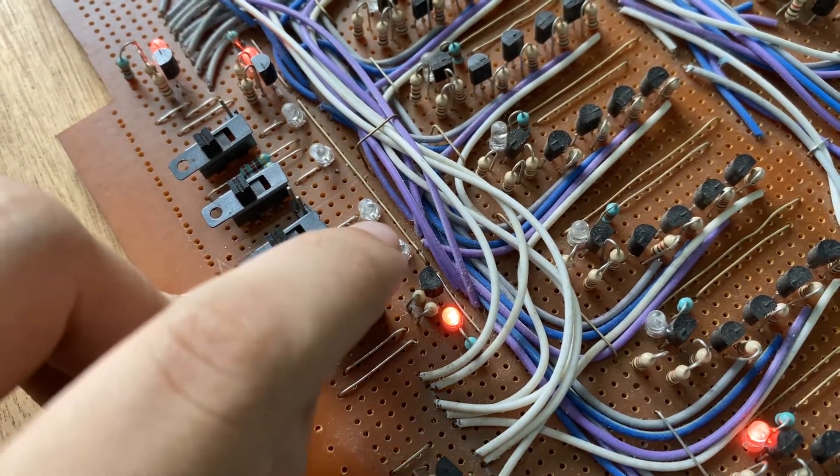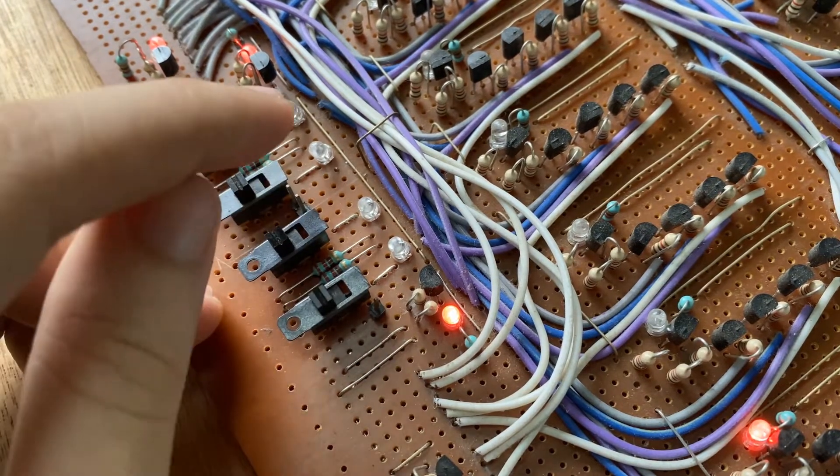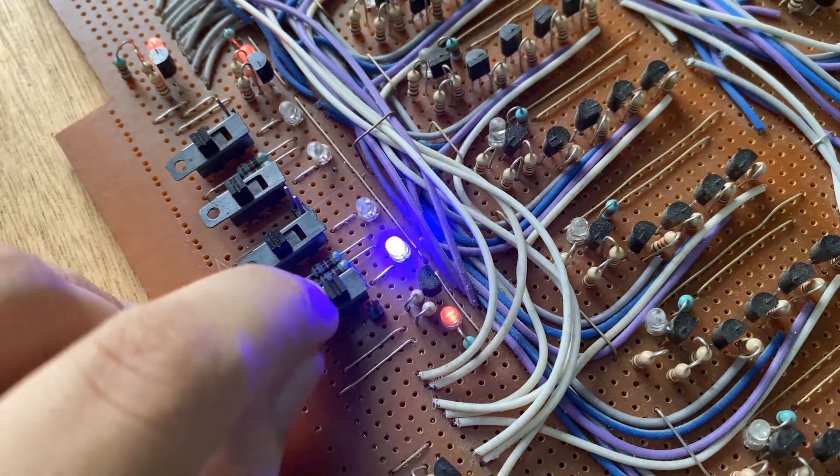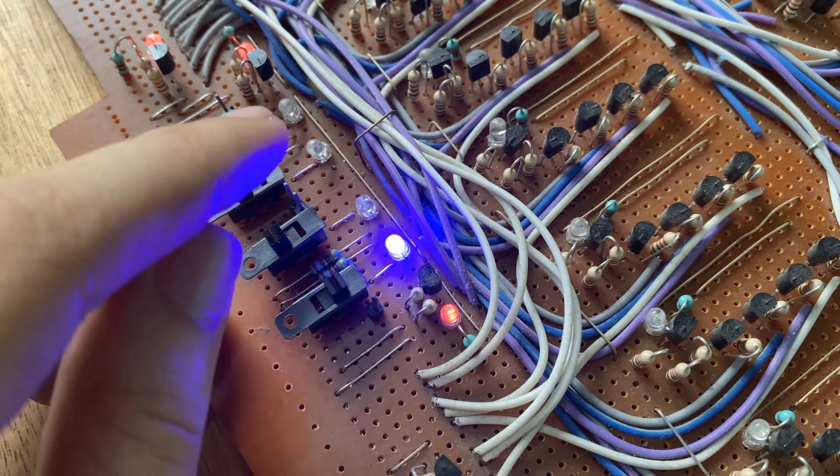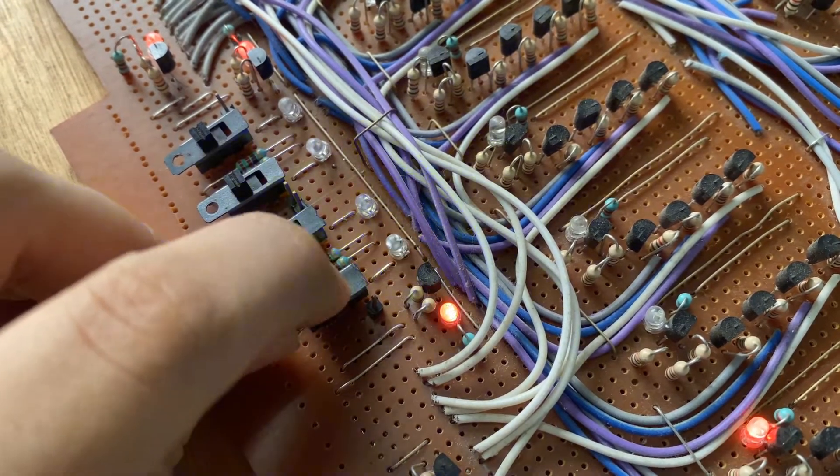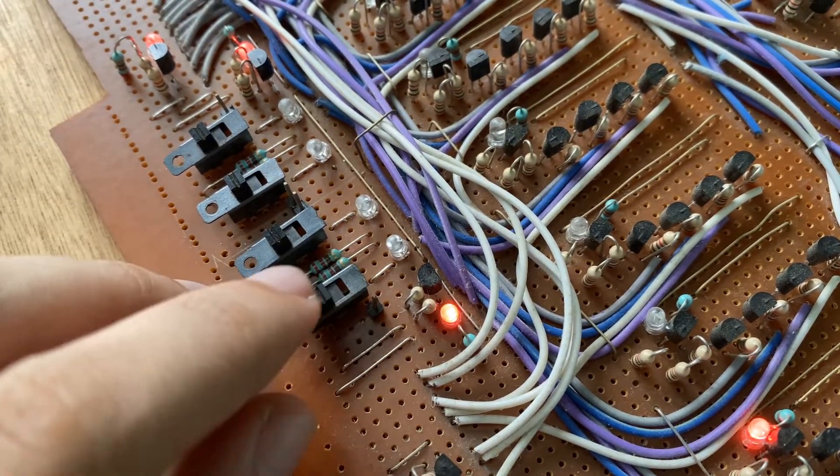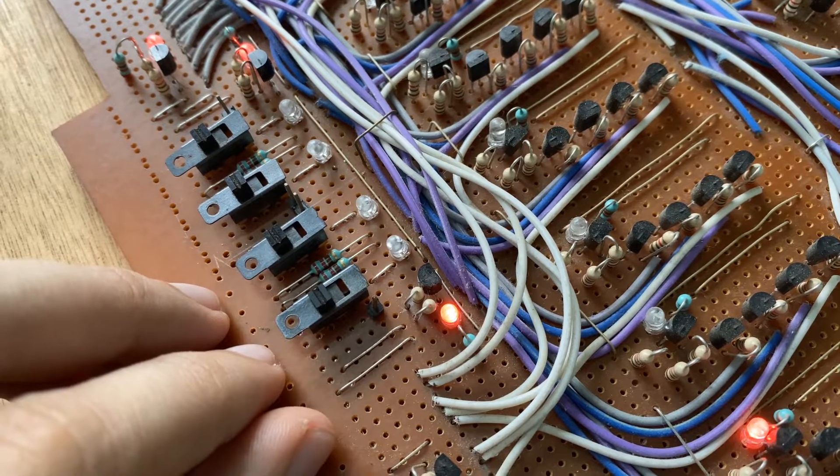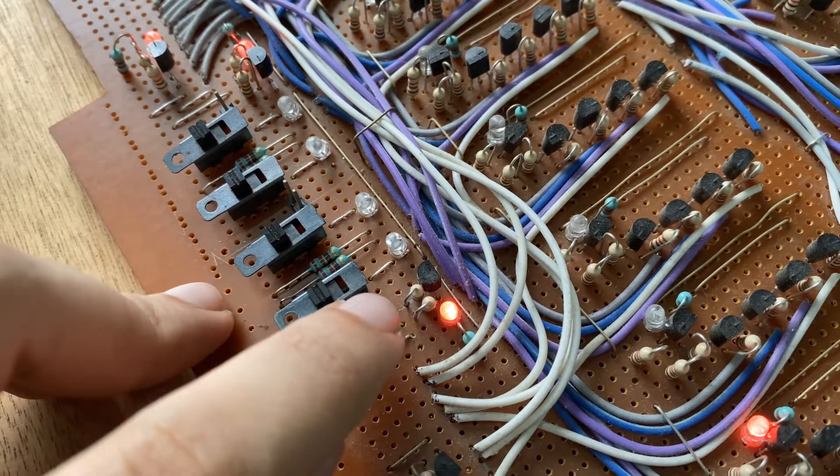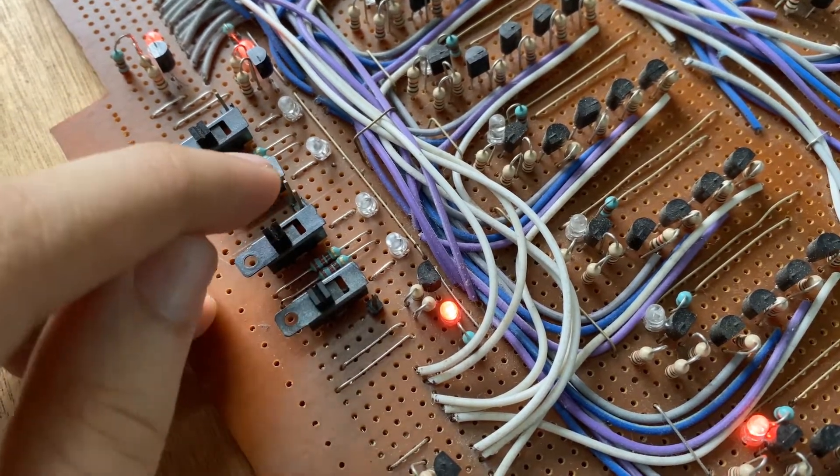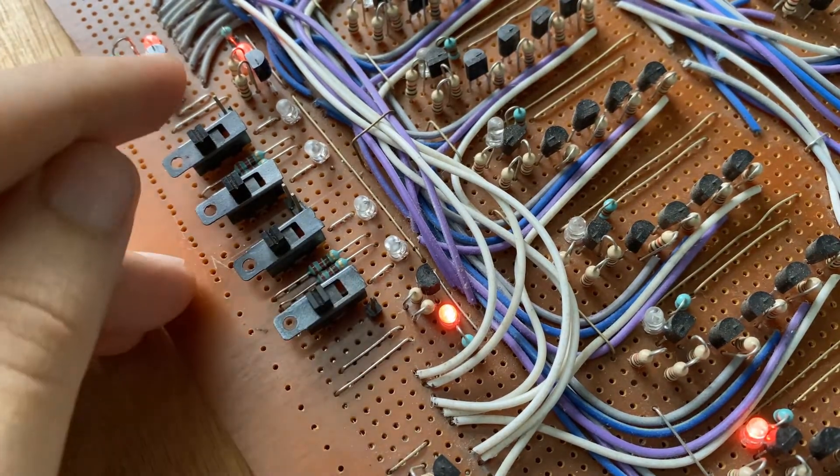Each switch has a blue indicator LED connected to it. The glowing LED shows the ON state which is logic 1 as an input while the OFF LED shows the OFF state that is logic 0 as an output. We can also provide external inputs to the board by using these female headers here.